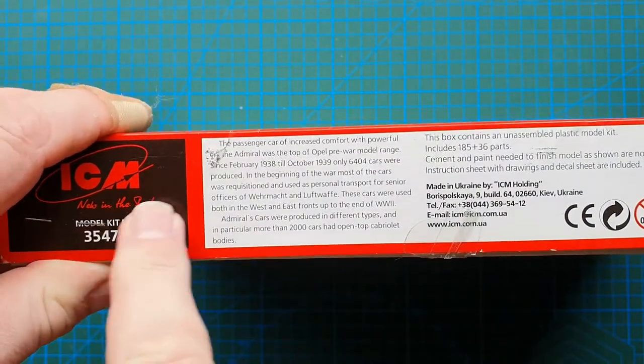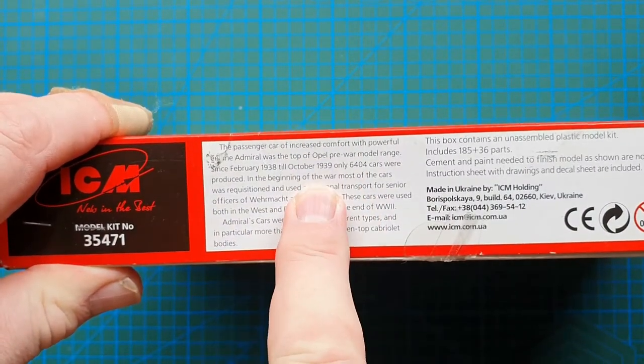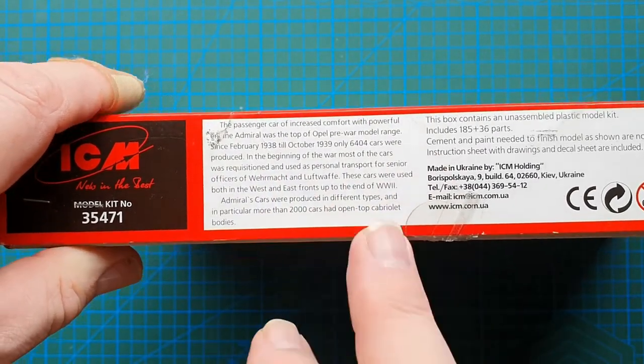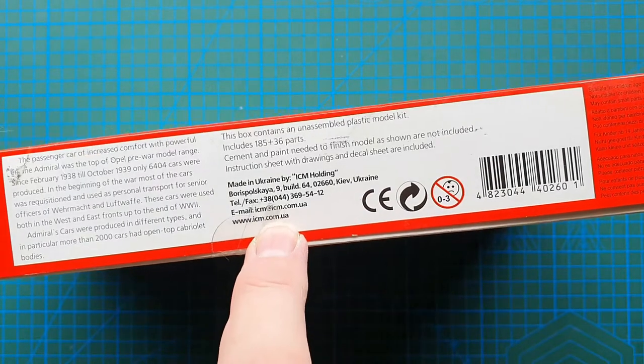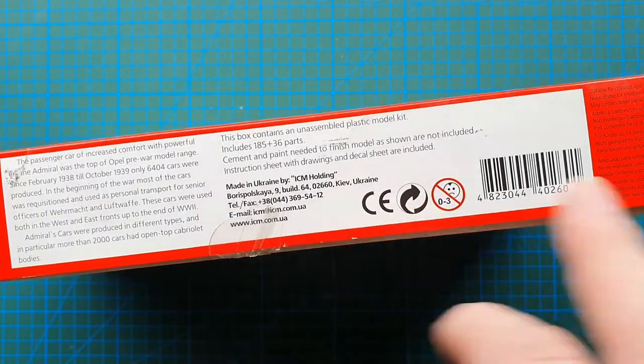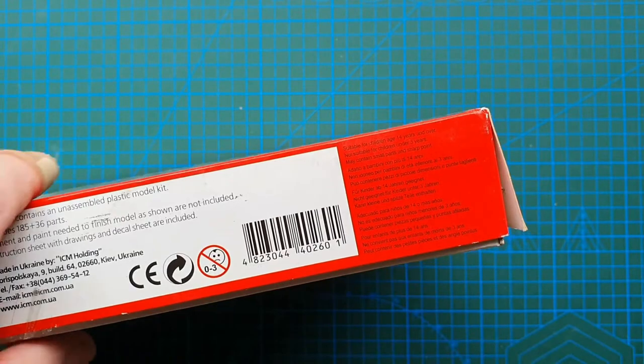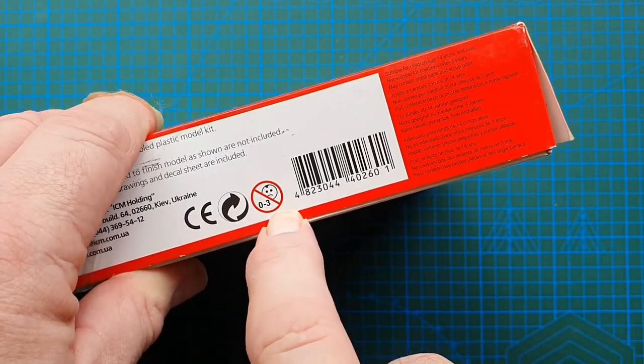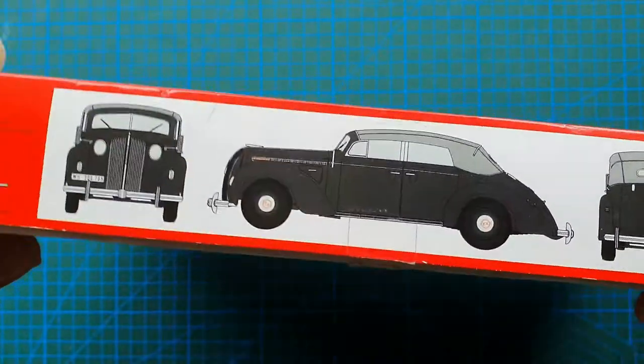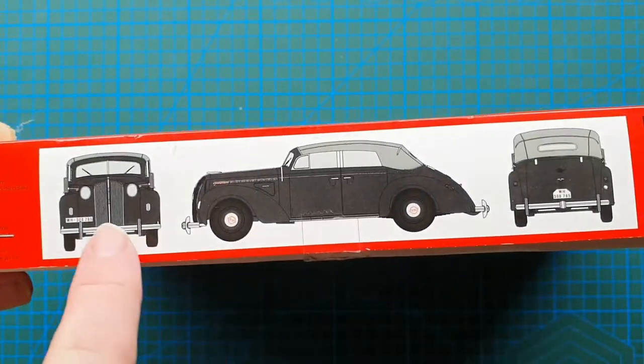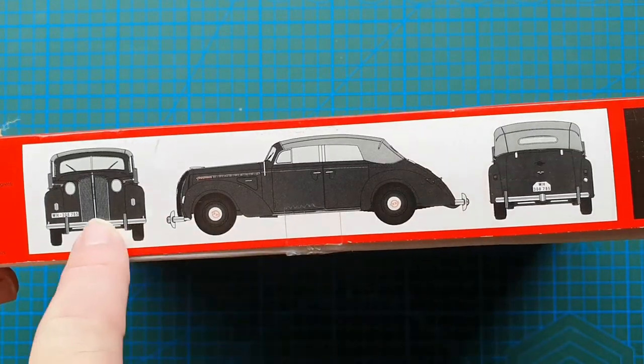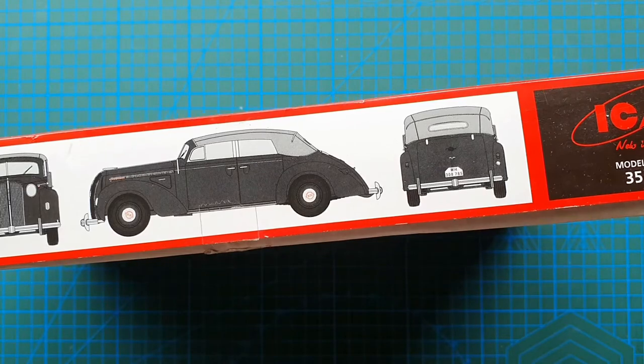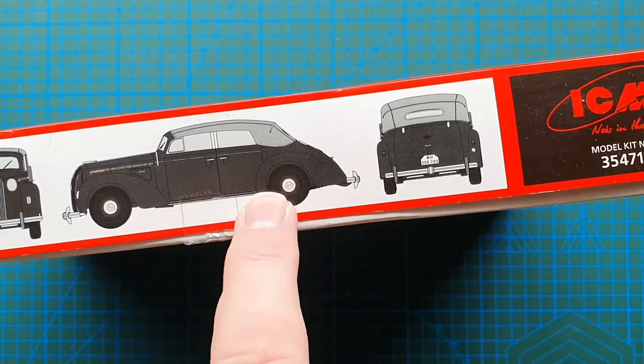As usual with ICM you get a brief history of the vehicle. Tells you how many cars they made. You also have ICM's address in the Ukraine and basic warnings about, you know, a three-year-old can't make this basically. And on the other side this is basically what you'll see in the kit.